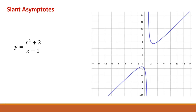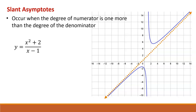There's one more type of asymptote we haven't talked about yet: slant asymptotes. Here's a graph with a slant asymptote — it's still a line the function approaches at the edges of the graph, but it's neither horizontal nor vertical. Slant asymptotes happen only when the degree of the numerator is 1 more than the degree of the denominator. In this function, the degree of the numerator is 2 and the degree of the denominator is 1, so we have a slant asymptote. To find its equation, we use long division.